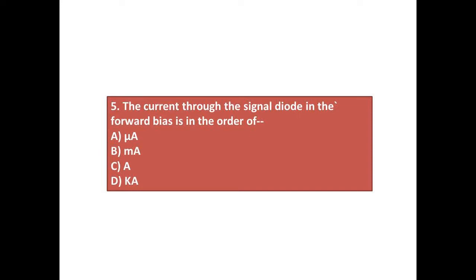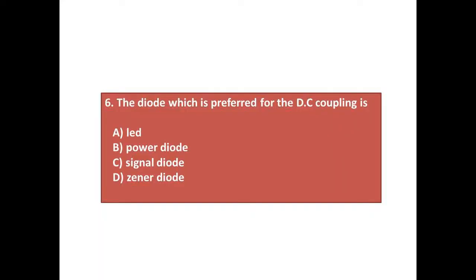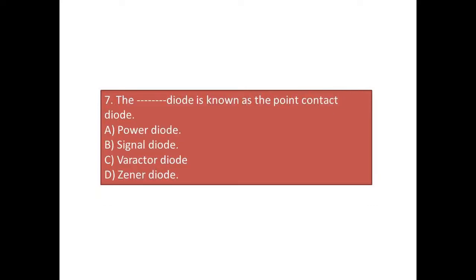Question number six: The diode which is preferred for the DC coupling is answers: A) LED, B) power diode, C) signal diode, D) zener diode. Question number seven: The dash diode is known as the point contact diode. Answers: A) power diode, B) signal diode, C) varactor diode, D) zener diode.